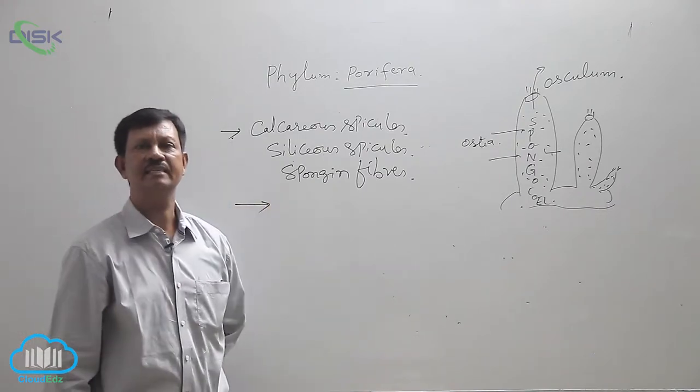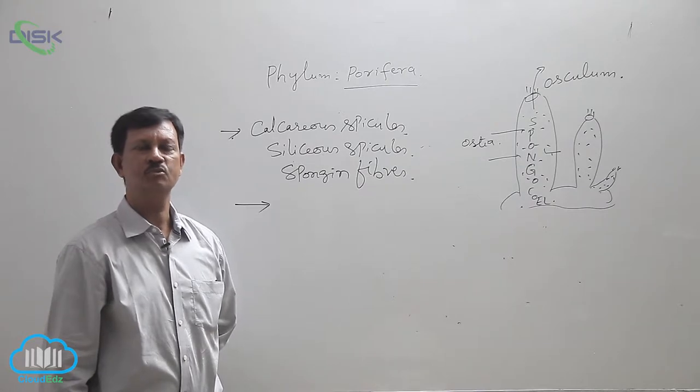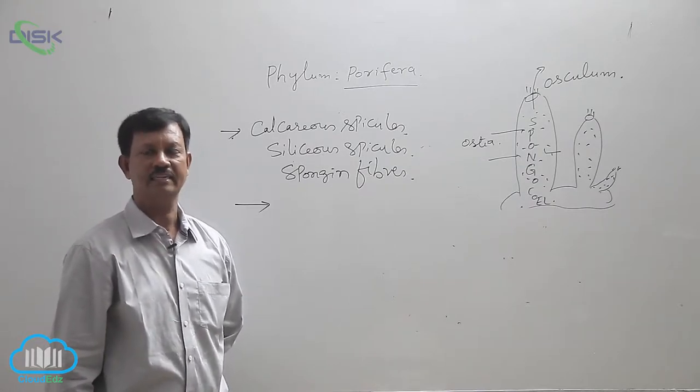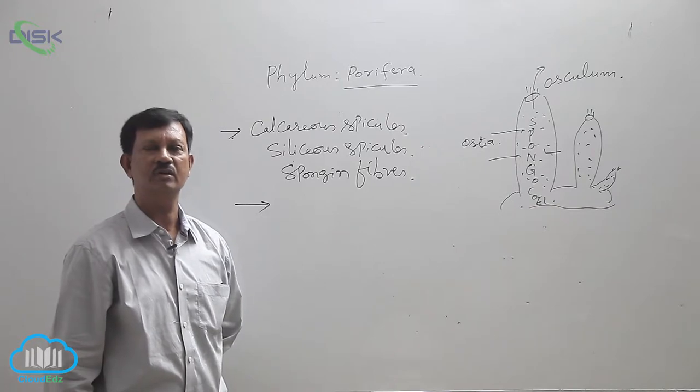Now nervous cells and sensory cells are absent. That's why there is no communication between one cell and another cell. That's why they are the most primitive multicellular organisms.